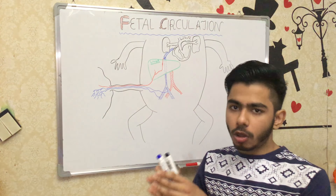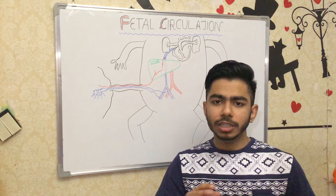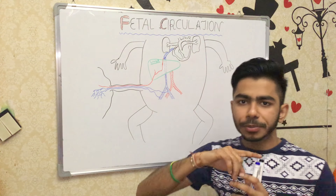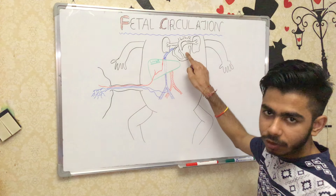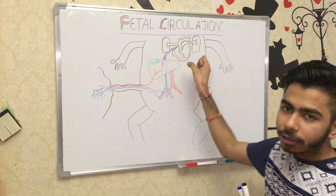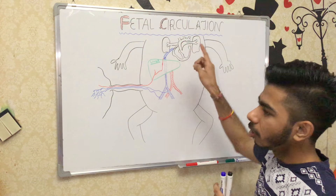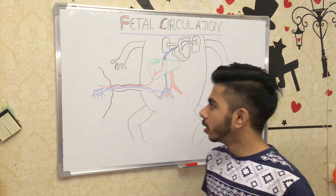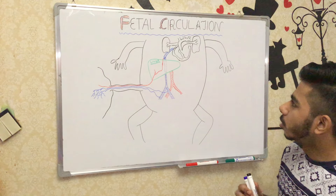Through ventilation and perfusion in the lungs, deoxygenated blood converts into oxygenated blood. This oxygenated blood comes into the left atrium via pulmonary veins, then goes into the left ventricle through the bicuspid or mitral valve. The left ventricle contracts and pumps oxygenated blood into the aorta, which supplies the whole body. That was our adult circulation recap.